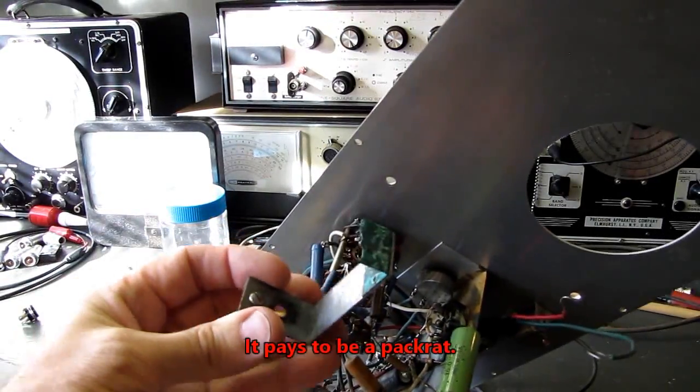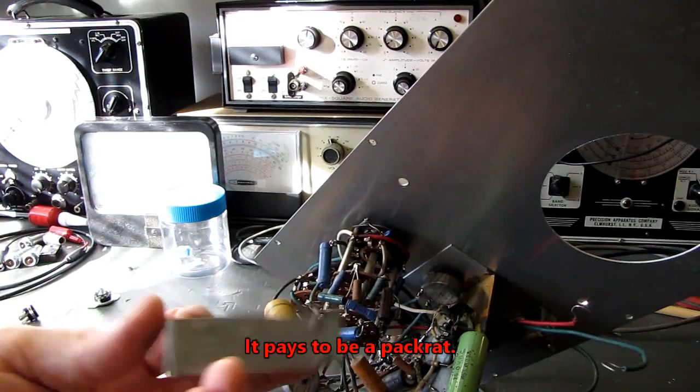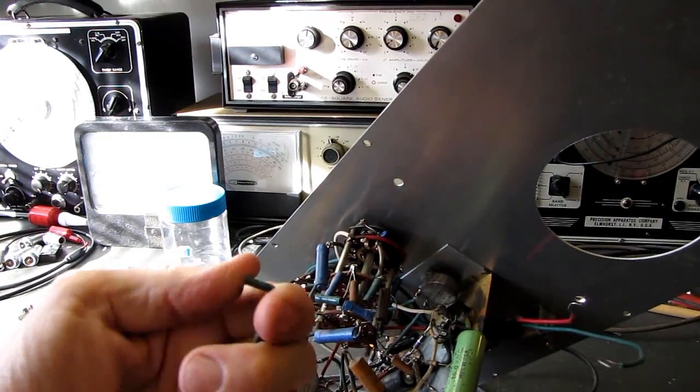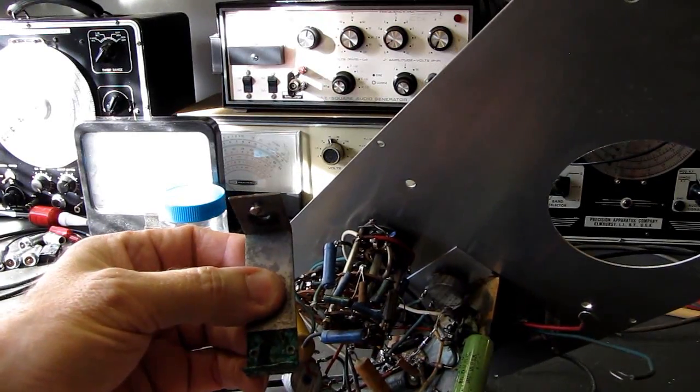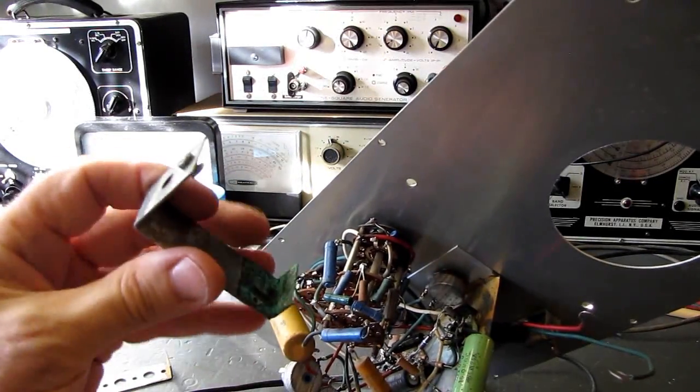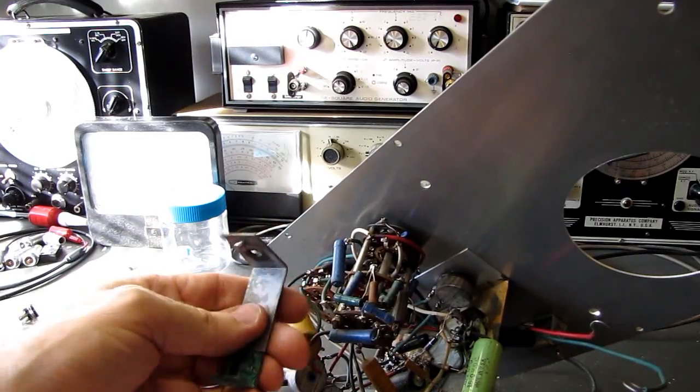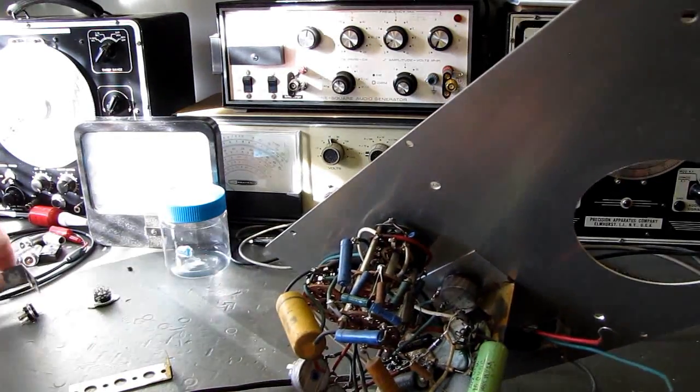The battery holder is in pretty bad shape, at least the copper contact on the bottom. I'll probably just mount a small single D-cell holder on here, one of the plastic ones, rather than try to rebuild that.